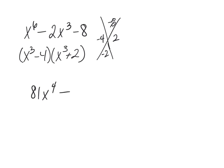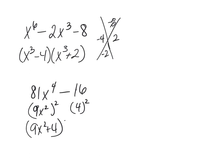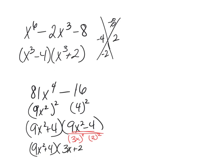Let's look at another difference of squares: 81x to the 4th minus 16. Now 81 is 9x squared squared, and 16 is 4 squared. So that's 9x squared plus 4 times 9x squared minus 4. I again have a difference of squares — 9x squared minus 4 is 3x squared minus 2 squared. So we factor this more: 9x squared plus 4 times 3x plus 2 times 3x minus 2. This is factored completely — you can't leave unfactored polynomials in your final answer.